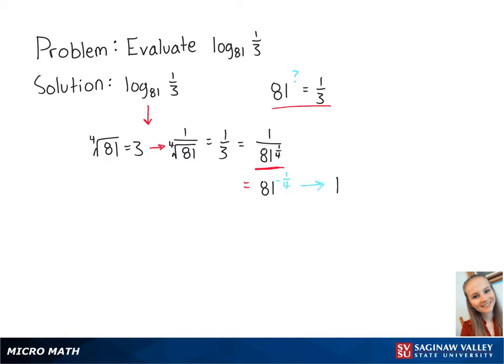Therefore, the log base 81 of one-third is equal to negative one-fourth. This is the final answer.